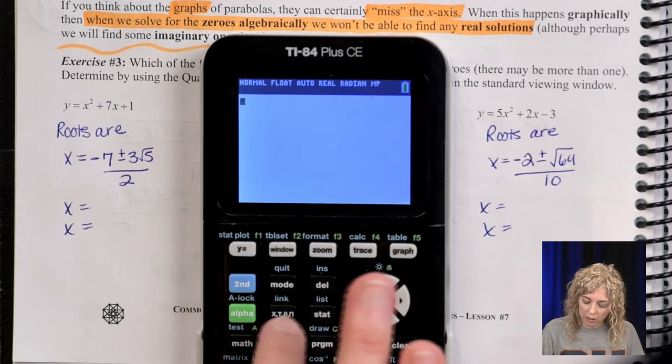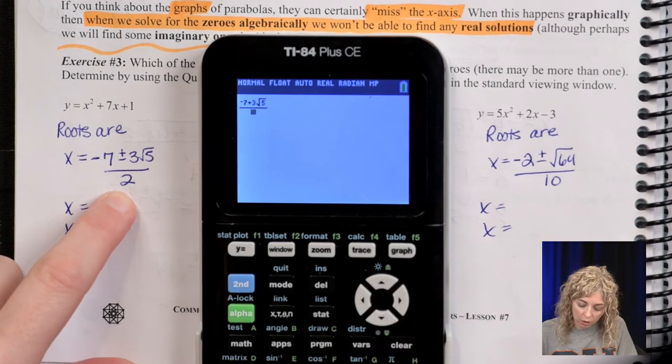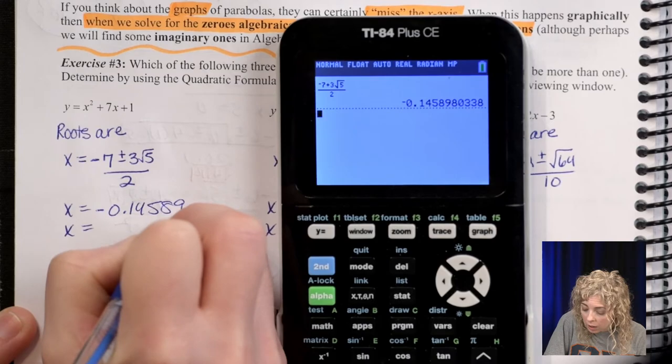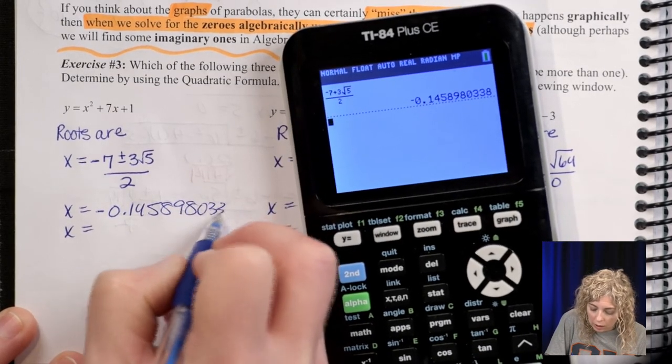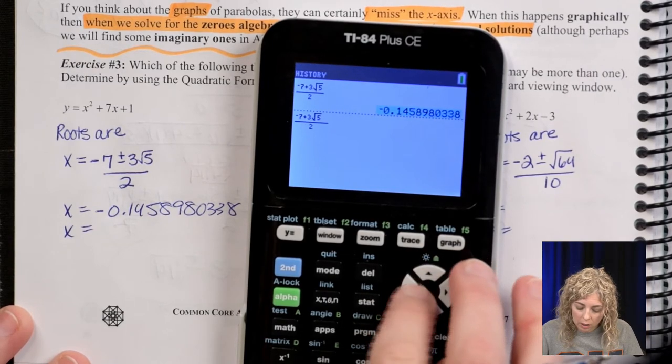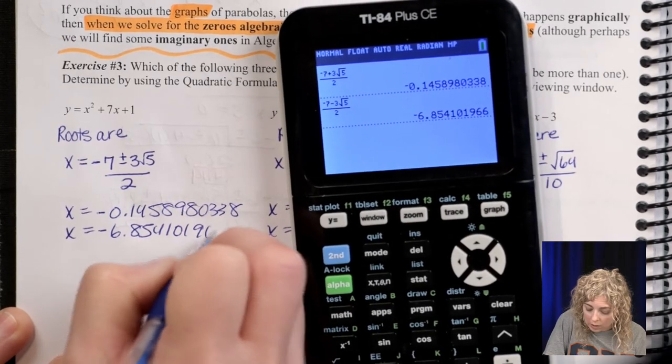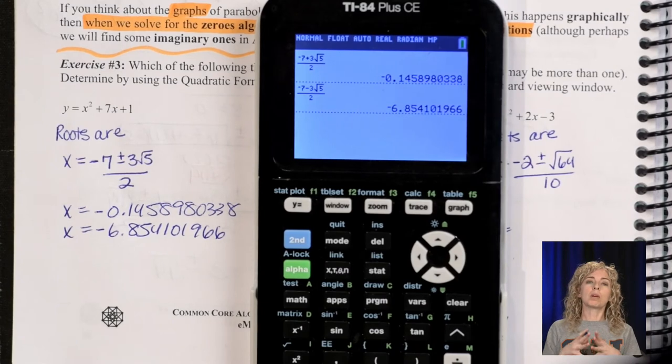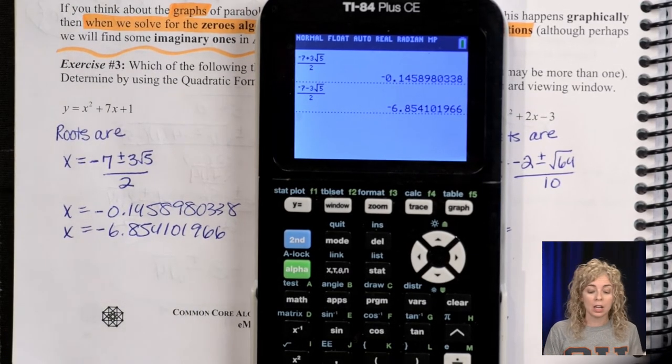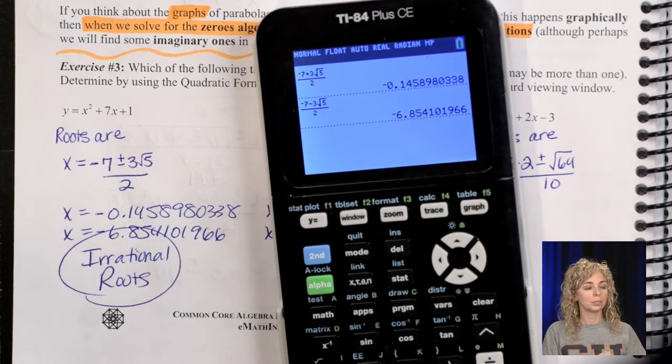So let's clear our calculator. Type the whole thing in using the fraction bar. So it would be negative 7 plus 3 radical 5 all over 2 is 1 root. So one solution is negative 0.1458980338. And remember, just go back up and grab it. Little trick. Bring it down and change that plus in the middle in the numerator to a minus. So the other root is negative 6.854101966. So here are our roots. We started the unit talking about rational and irrational. Rational numbers repeat, they terminate. These do not terminate, these do not repeat. These are irrational roots.